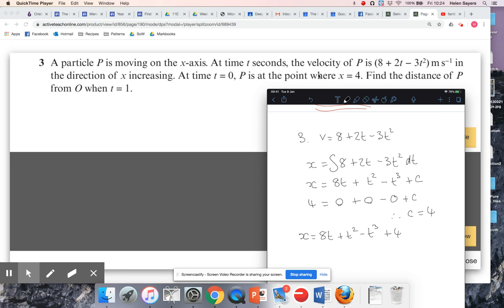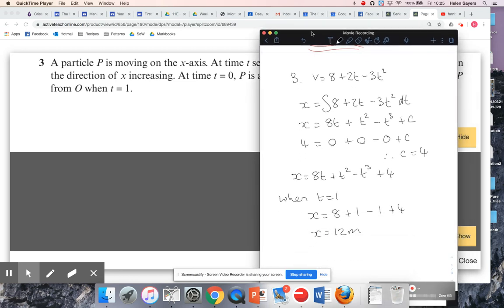So I want the distance when T is one. So if I substitute T is one into that, X is going to be, so eight times one plus one squared minus one cubed plus four is going to give me 12. Scroll down a little bit, right.